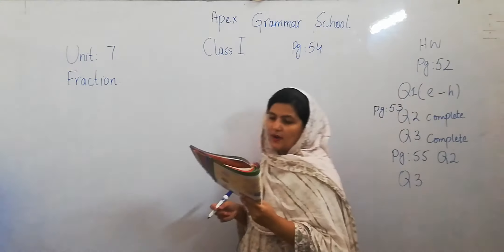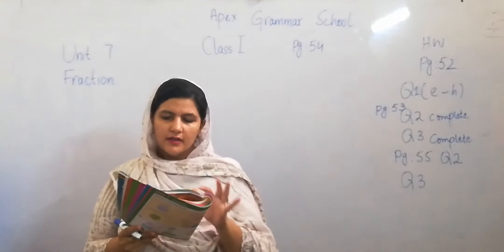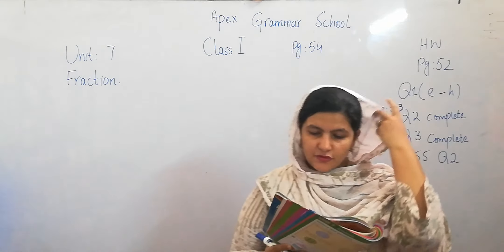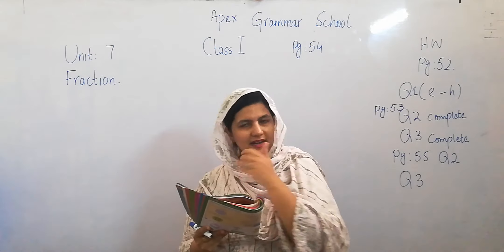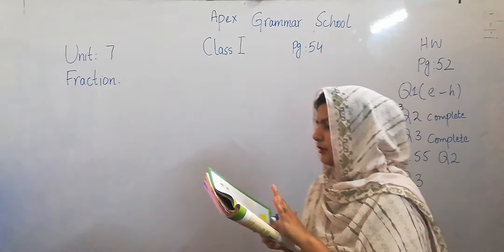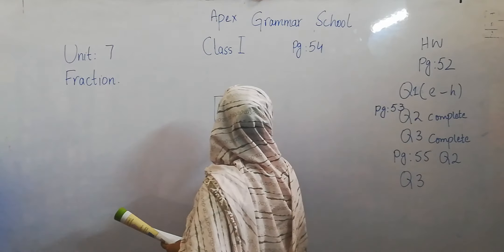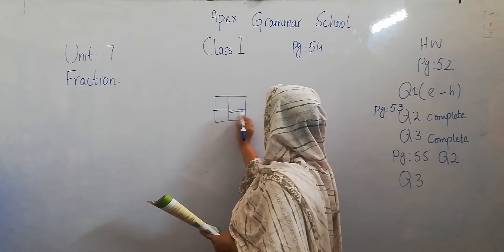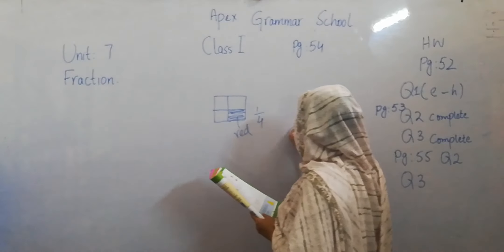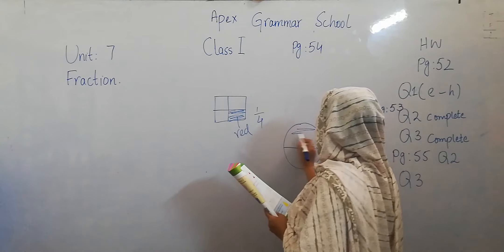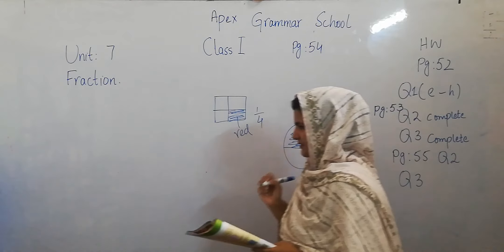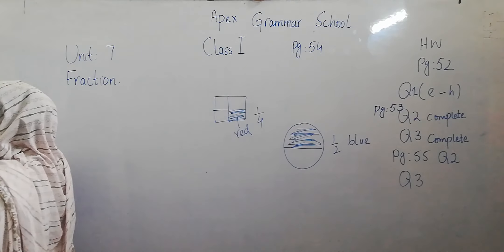Question number three is also your homework. You have to find the shapes that are divided into quarters, color 1 over 4 red, and find the shapes divided into half, color 1 over 2 blue. If you have a circle, color it blue for one over two. So question number three is your homework.